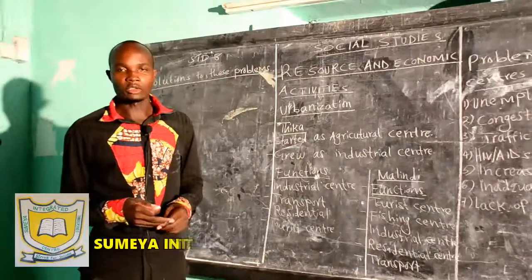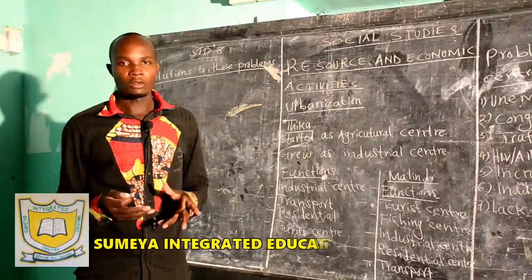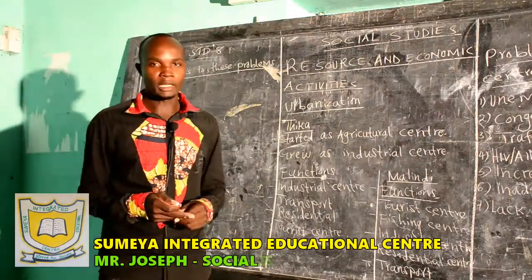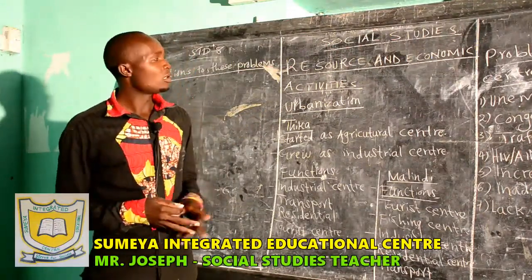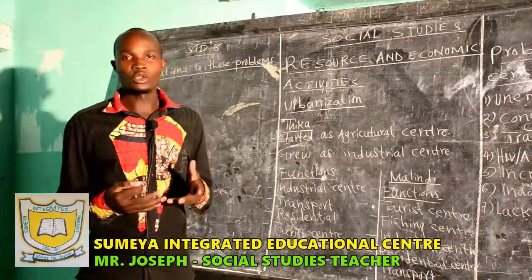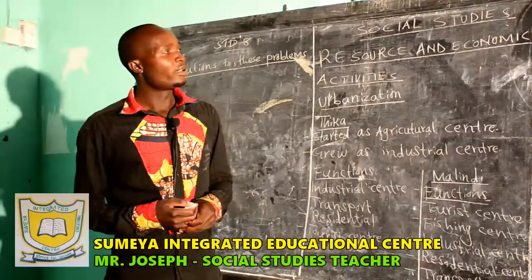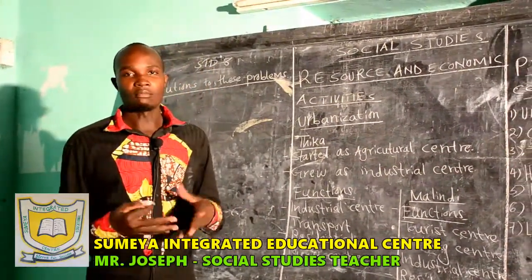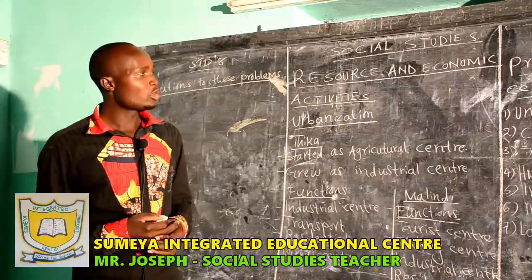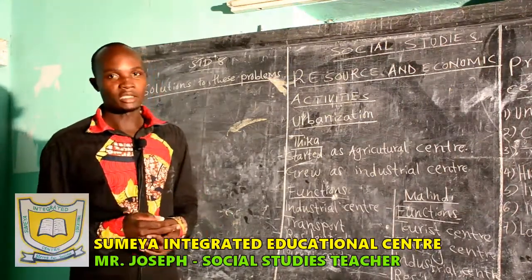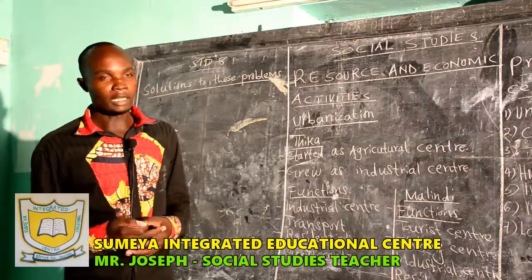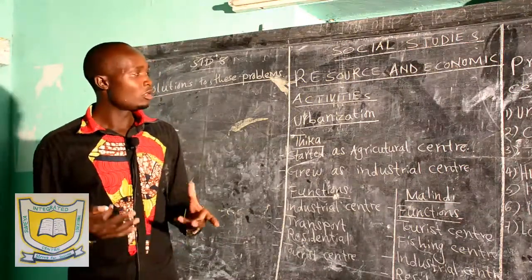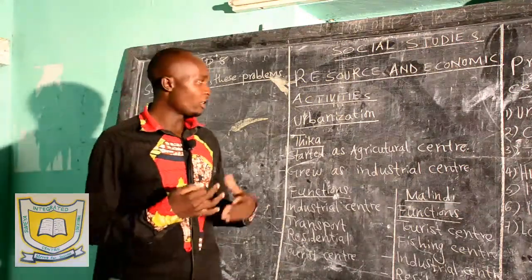Welcome again to our lesson today. We are going to continue with our topic on resources and economic activity. We had said earlier that a resource is anything that we use to create wealth, and that economic activities are things that man engages in to earn a living — for example, transport and communication, mining, tourism, and lumbering. We had discussed some towns like Kisumu, Mombasa, and Nairobi, and we are continuing with that.